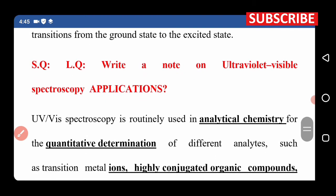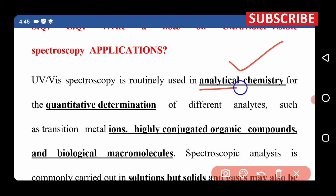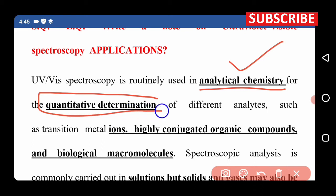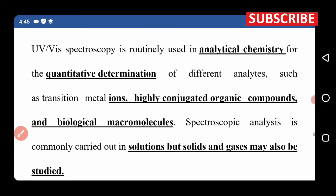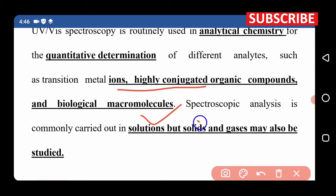The next short question is about ultraviolet visible spectroscopy applications. UV-Vis spectroscopy is used in analytical chemistry to determine the quantity of substances in different samples. Transition metals and organic compounds are important subjects, as are their electronic transitions. Spectroscopic analysis is most commonly performed on solutions, but solids and gases can also be analyzed.